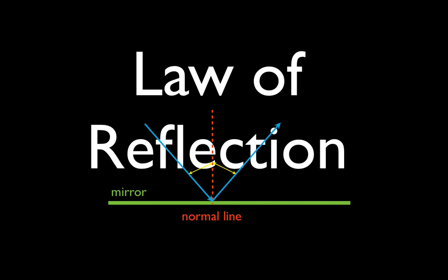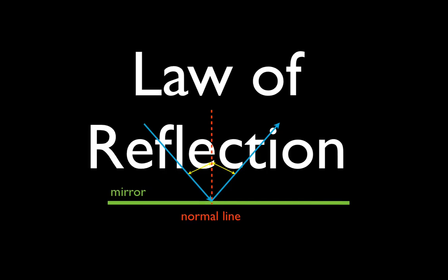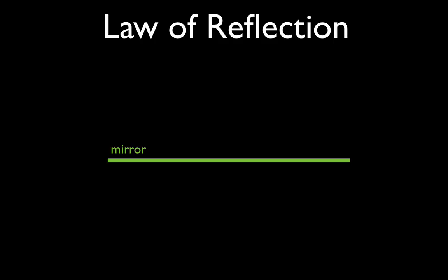In today's video I'm going to take a few minutes to go over the law of reflection. The green line here is our mirror. We have a ray coming in to the mirror — that ray is called the incident ray. It is a ray of light that is coming into the mirror, striking the mirror right there.